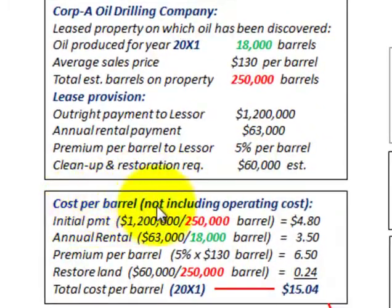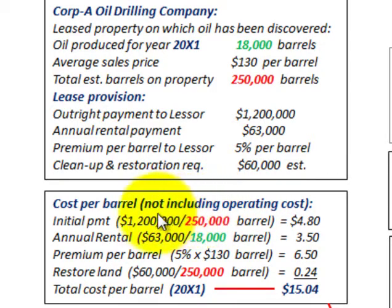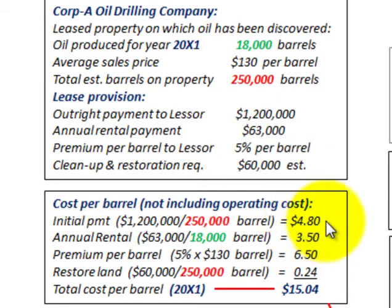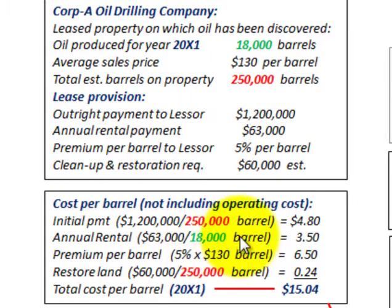Let's look at our cost per barrel, not including operating costs. This is how we calculate our depletion cost on a per unit barrel basis. We have an initial payment of $1,200,000 divided by the total estimated barrels of 250,000, giving us a cost of $4.80 per barrel. Then we have the annual rental payment of $63,000 divided by the 18,000 barrels extracted this year, which gives us $3.50.